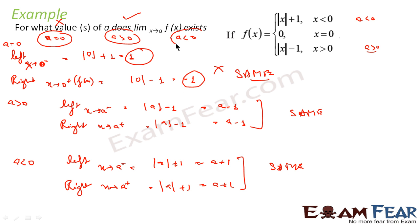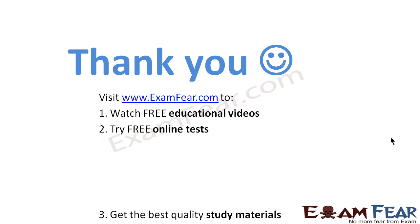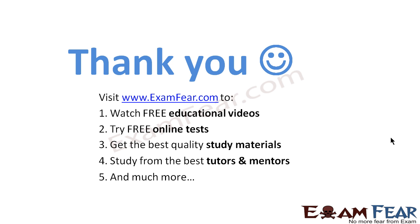So we can say that at a less than zero also, the limit exists. For all values of a except a equal to zero, the limit exists. What we have done: we have seen that this equation breaks at x equal to zero, so we tested three conditions — a equal to zero, a greater than zero, and a less than zero. We found that if a equals zero the left limit and right limit are not same, but for a greater than zero or a less than zero, they are equal. Thus for this equation the limit exists for all values of a except a equal to zero. Thank you, visit examfear.com to watch free educational videos.